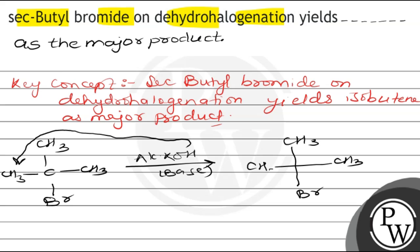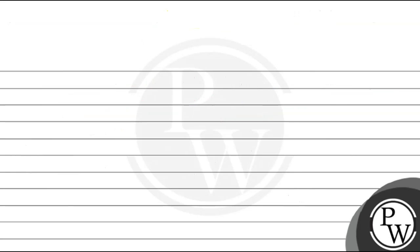This leaves a CH2 minus carbanion. The two groups separate out, and the lone pair forms a double bond in the next step. Then Br removes as Br minus, and isobutene is formed.